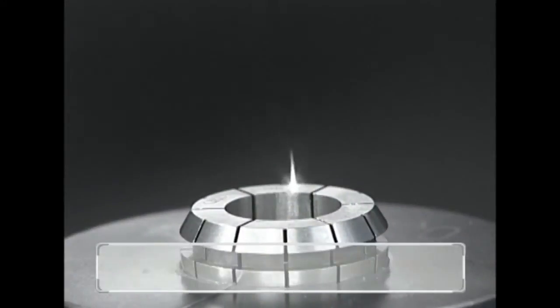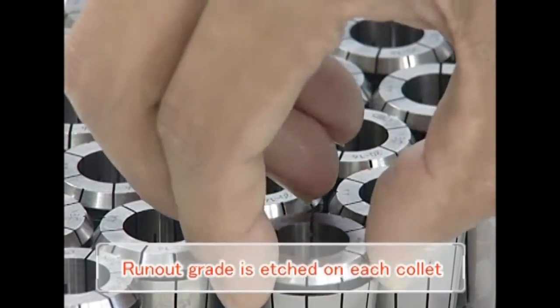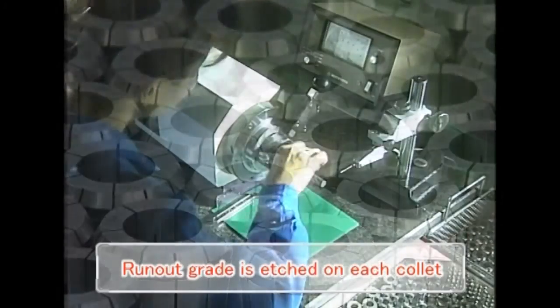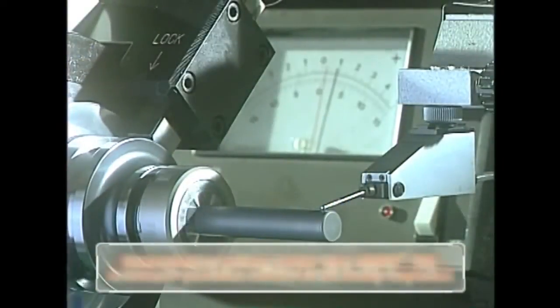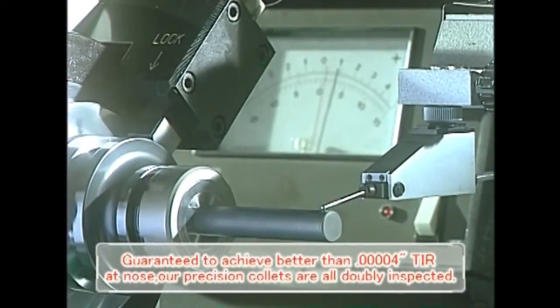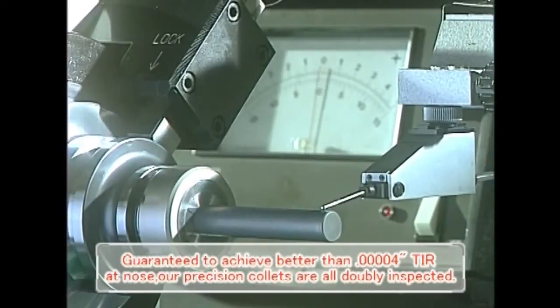This system utilizes New Baby Collets, the world's first etched with a double-A grade that guarantees their excellent run-out accuracy. Every New Baby Collet is inspected twice to guarantee this accuracy.